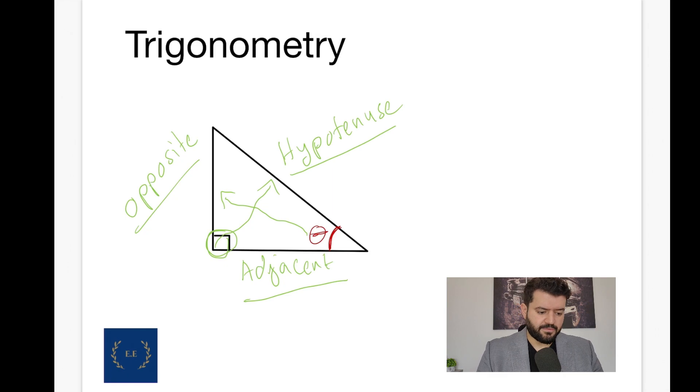Which leads us to develop a very important concept. Sine of theta, the angle, equals to opposite over hypotenuse. This is the first trigonometric function that you should memorize and know by heart. Sine of theta, sine of the angle that we have, is the opposite side, the length of it, divided by the hypotenuse.